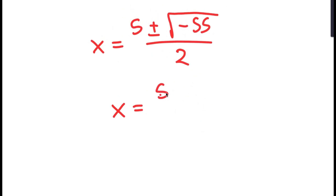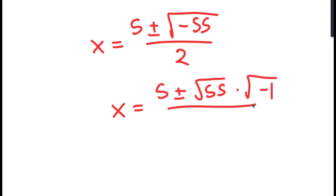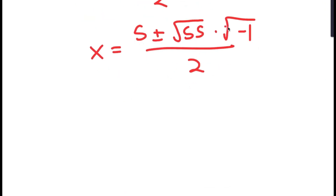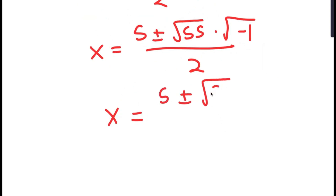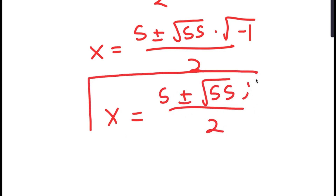This is equal to the square root of 55 times the square root of negative 1, all over 2. The square root of negative 1 is equal to the imaginary number i. So I get 5 plus or minus the square root of 55 times i, over 2. These are two more solutions to this equation.